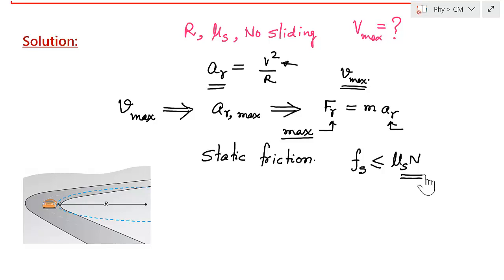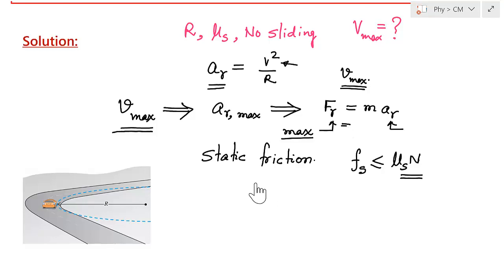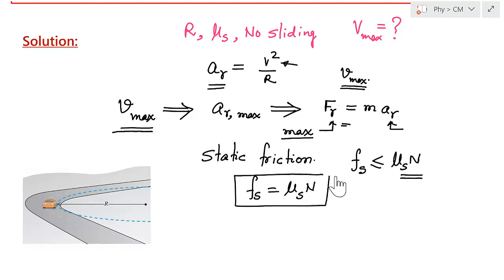The static friction force satisfies Fs ≤ μs·N. Since we want maximum velocity, we need maximum friction force, so the friction force at the limit equals μs·N, where N is the normal reaction. Therefore, the force in the radial direction is simply μs·N.